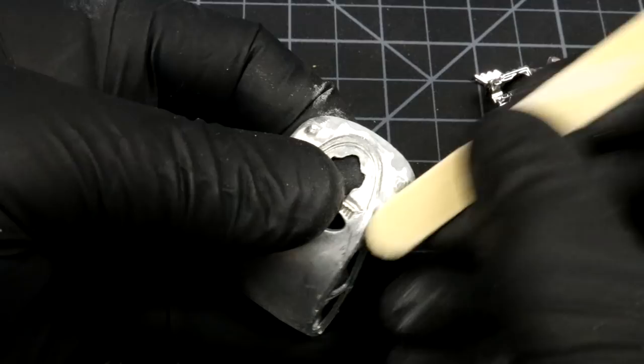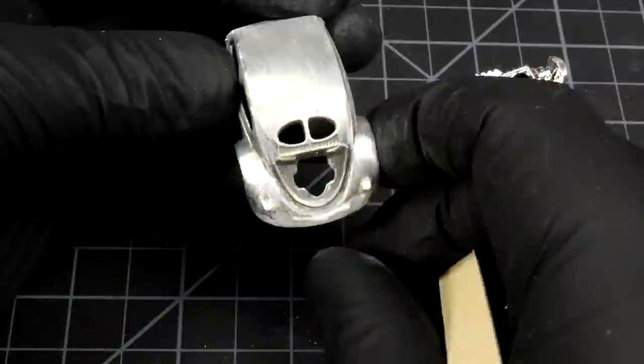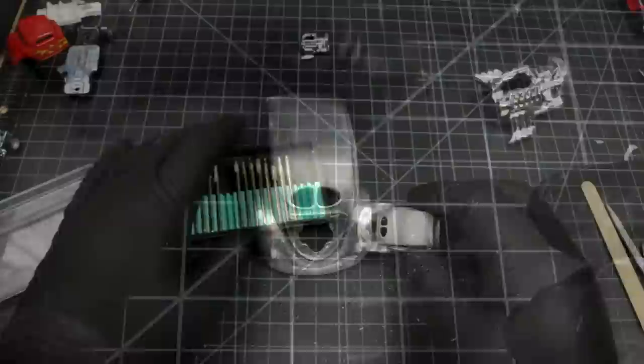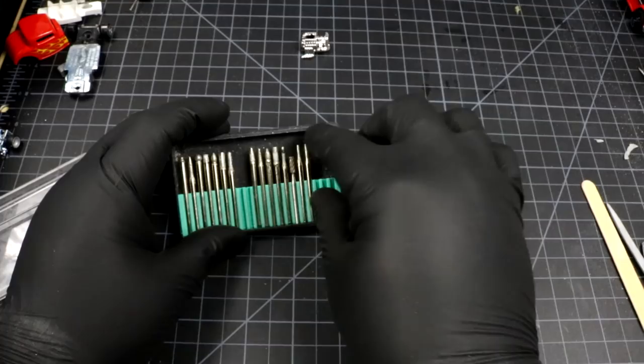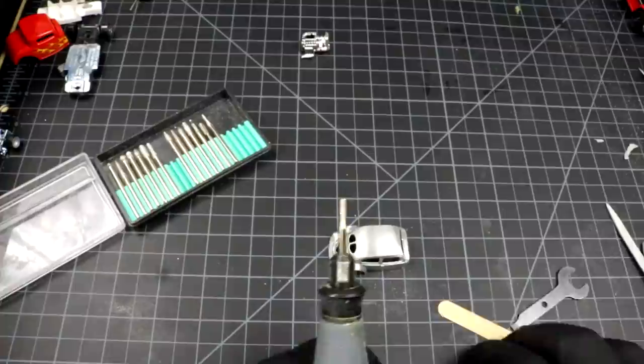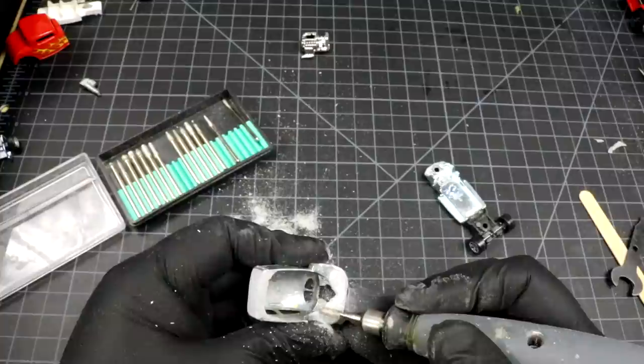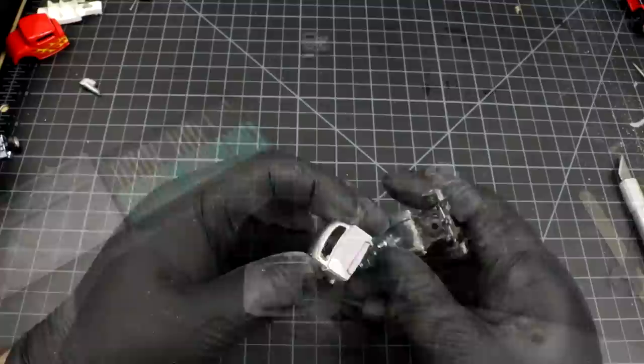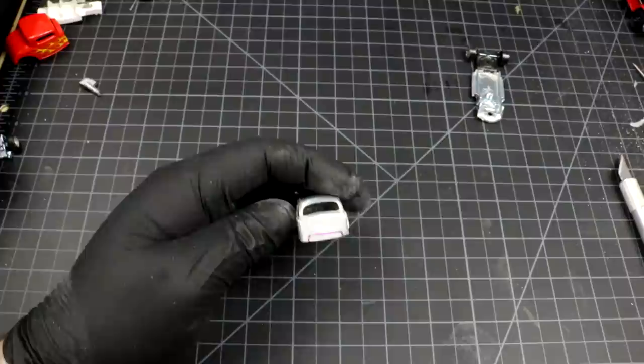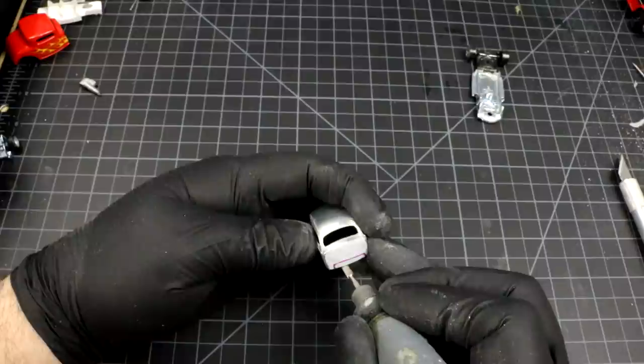All right, now we're going to break out our little diamond burrs. We're going to do a little bit of trimming. I'm going to cut out some of the firewall so it's going to clear the frame rails. It's just kind of a rough guesstimate - it's not even straight.